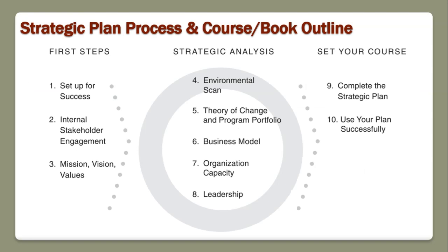The book we're using for this course is one of the best books I've seen for nonprofits. The outline is: week one covers the first two chapters on stakeholder input; week two covers mission, vision, values, and environmental scan; week three covers nonprofit theory of change and evaluating your program portfolio; week four is evaluating your business model; then organizational capacity and leadership. Week seven you complete a draft of your strategic plan, and week eight you revise it and discuss how to actually use it.